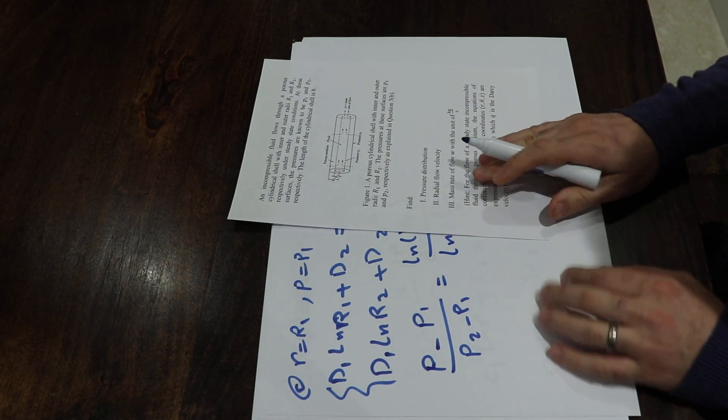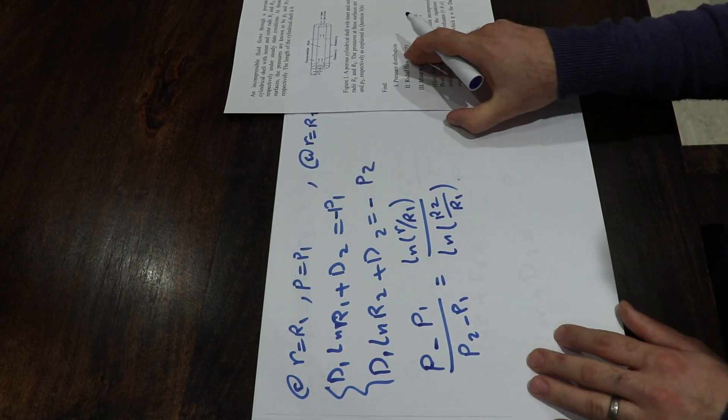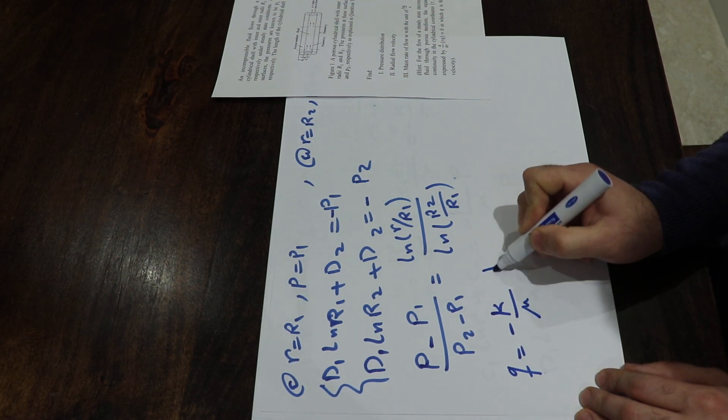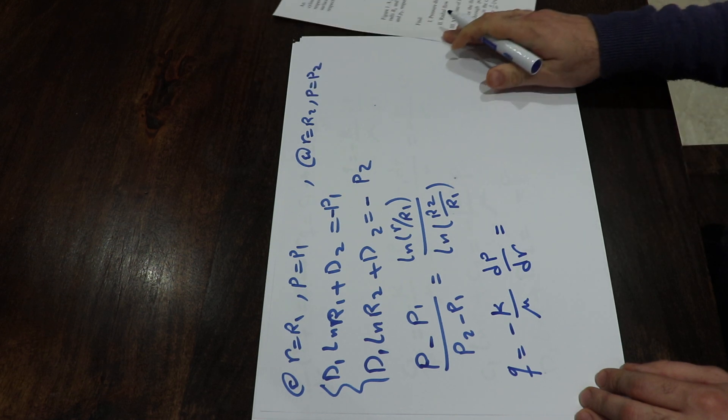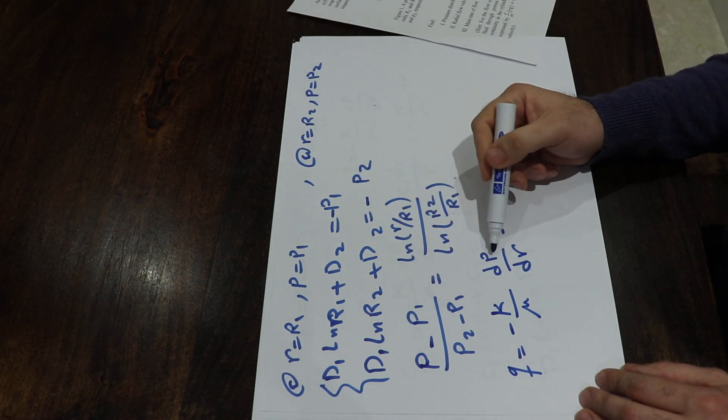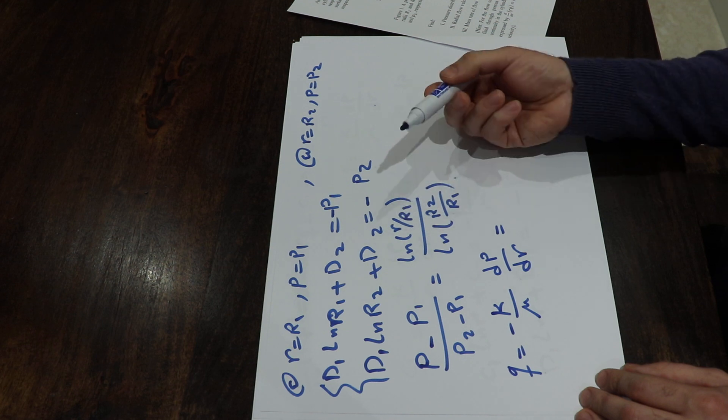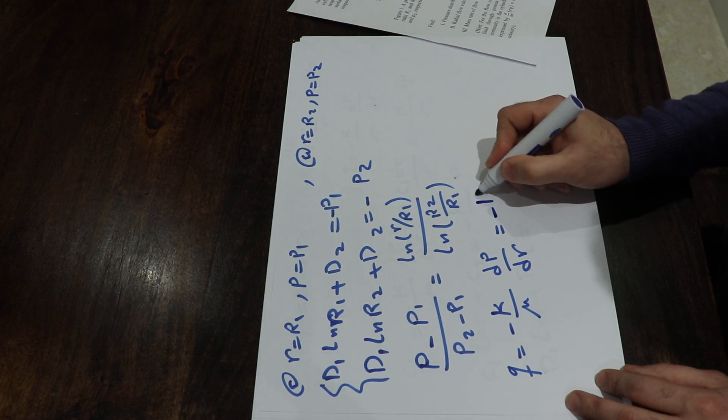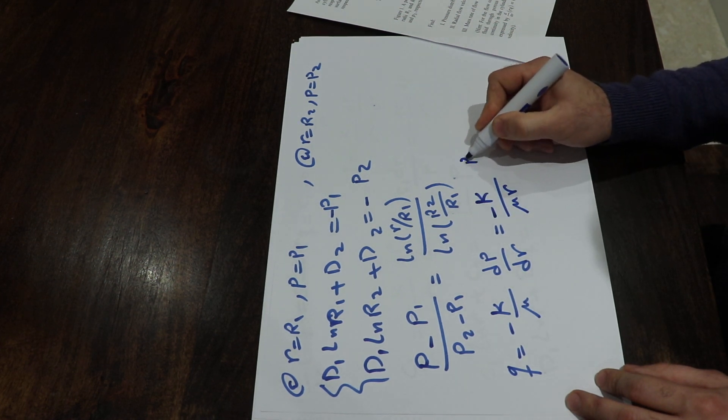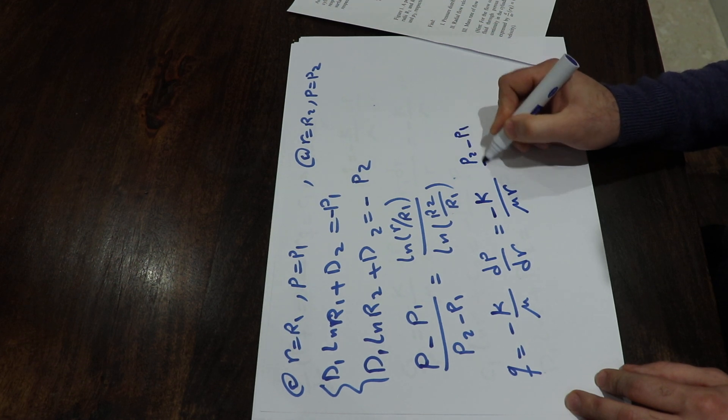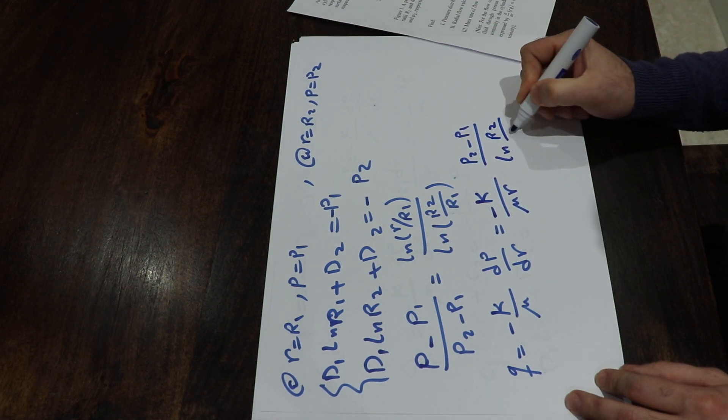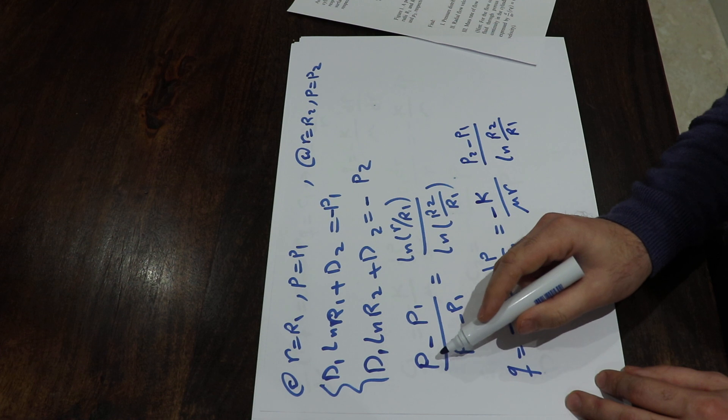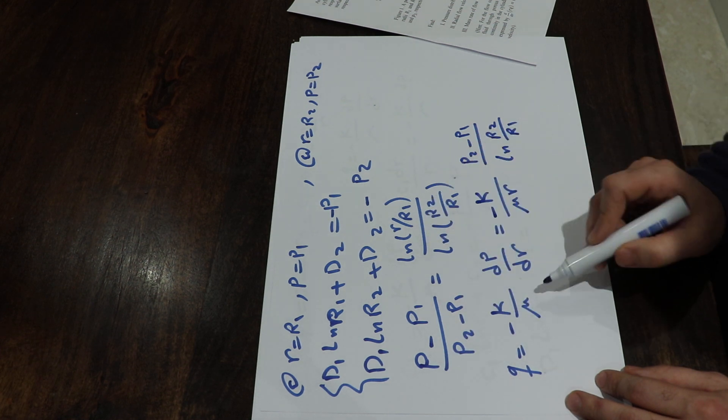The second part is radial flow velocity. For the radial flow velocity, we know Darcy's law: Q equals minus K/mu dP/dR. All you need to do is take the derivative of this expression with respect to R, because P is a function of R. If you do that, that will equal minus K/mu times 1/R times (P2 minus P1) divided by ln(R2/R1). All I did here is take the derivative of P with respect to R and plug in this equation.